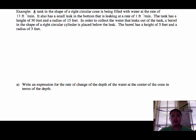Let me read the example for you. A tank in the shape of a right circular cone is being filled with water at the rate of 13 feet cubed per minute. It also has a small leak in the bottom that is leaking at a rate of 1 feet cubed per minute. The tank has a height of 30 feet, a radius of 15 feet. In order to collect the water that leaks out of the tank, a barrel in the shape of a right circular cylinder is placed below the leak. The barrel has a height of 5 feet and a radius of 3 feet.